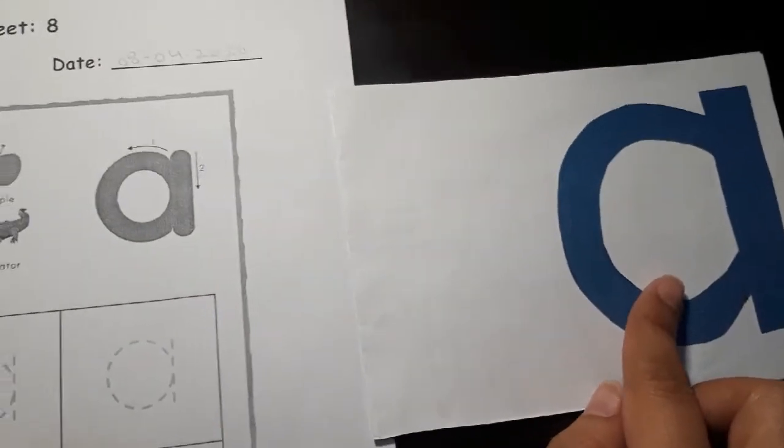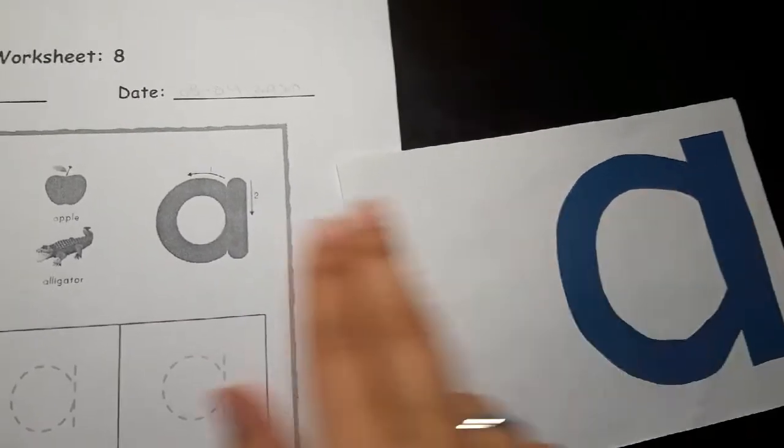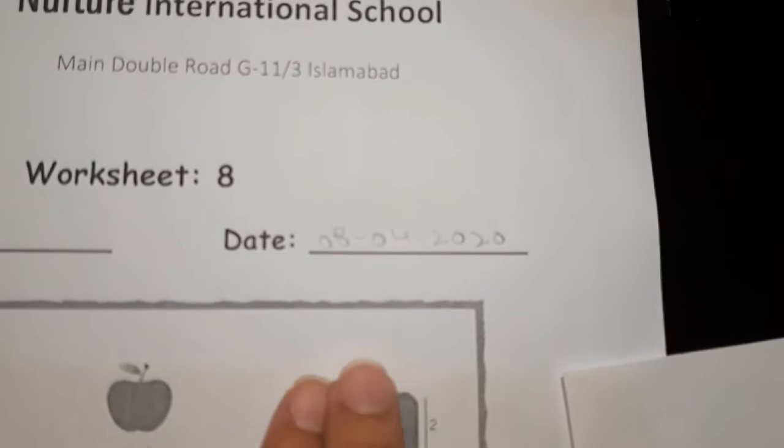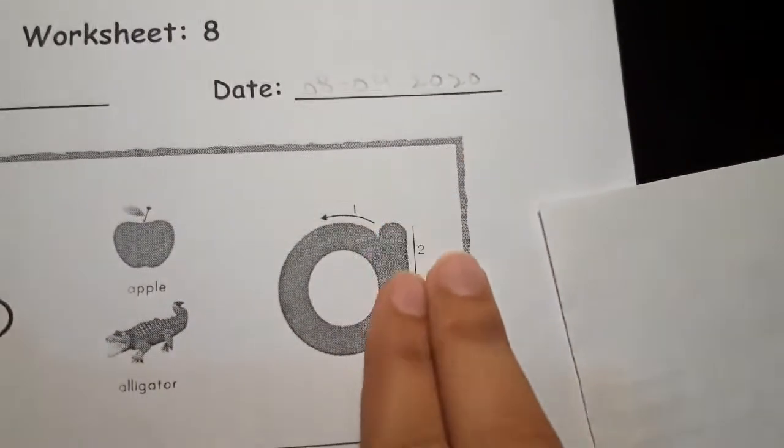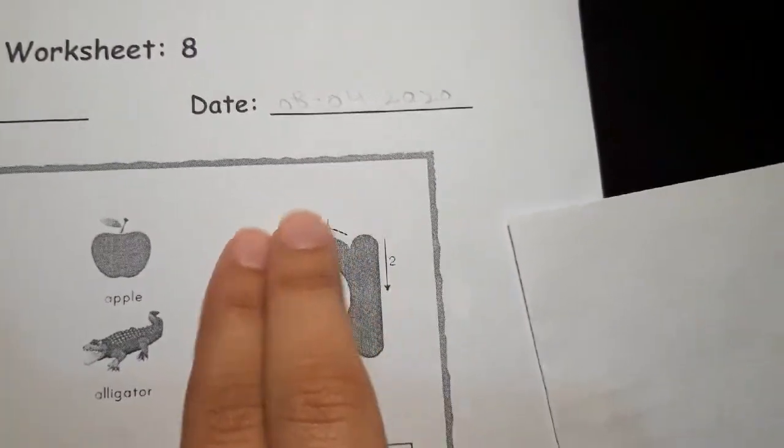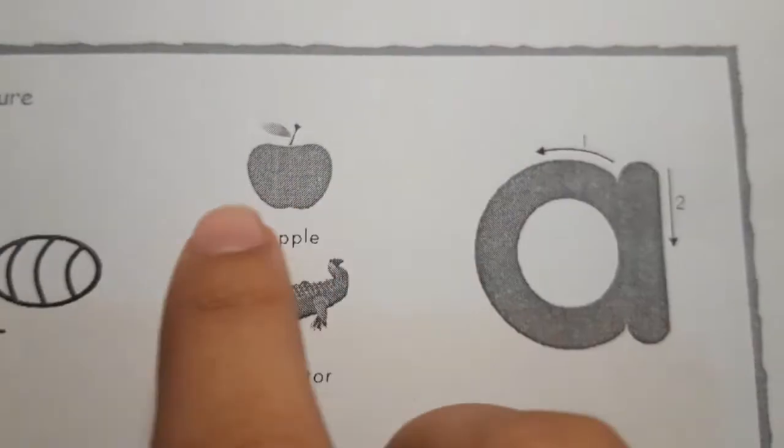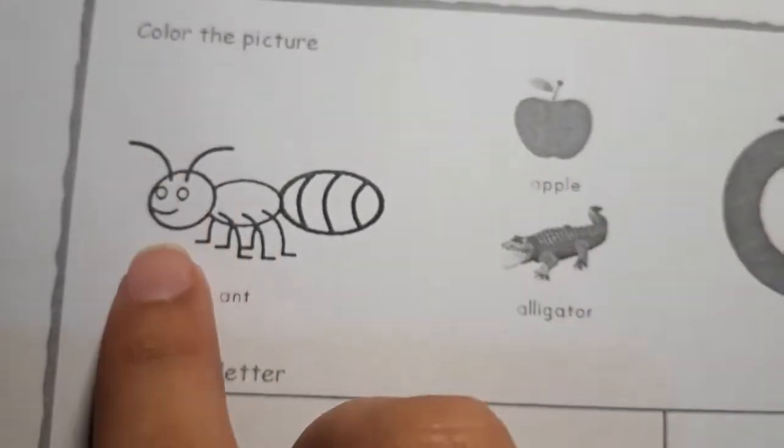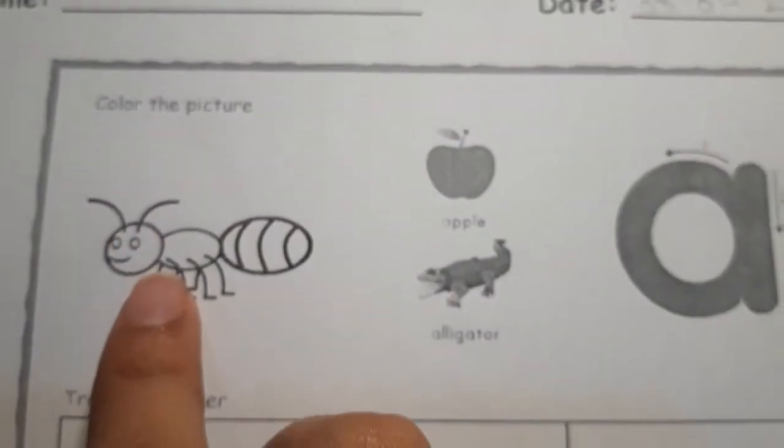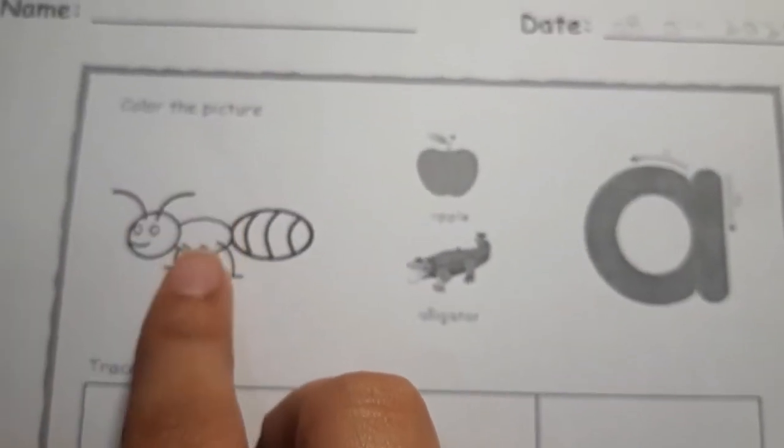First thing first, you can always use your flashcard sandpaper letter. Make them trace this A we have here like this. Tell them to hold two fingers. This is how they are going to trace it. A - alligator. A - apple. A - ant. They can color the ant with brown color or black color.